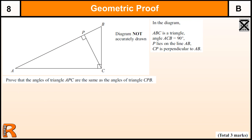Geometric proof, Grade B GCSE Level 8. Often geometric proofs are much higher levels than this, but this one is a fairly straightforward one, that's why I put it at Grade B.